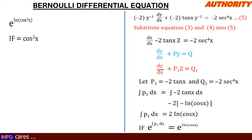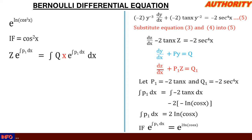The solution to this differential equation is: z times the integrating factor equals the integral of Q times the integrating factor dx. So z·cos^2(x) equals the integral of Q·cos^2(x) dx. Our Q is minus 2·sec^4(x), so we have z·cos^2(x) equals the integral of minus 2·sec^4(x)·cos^2(x) dx.